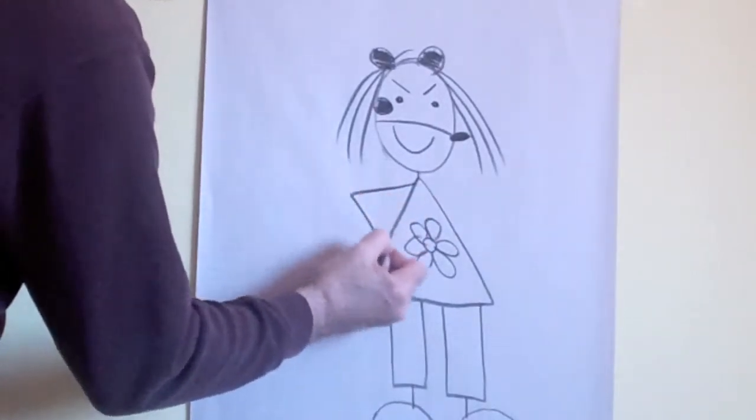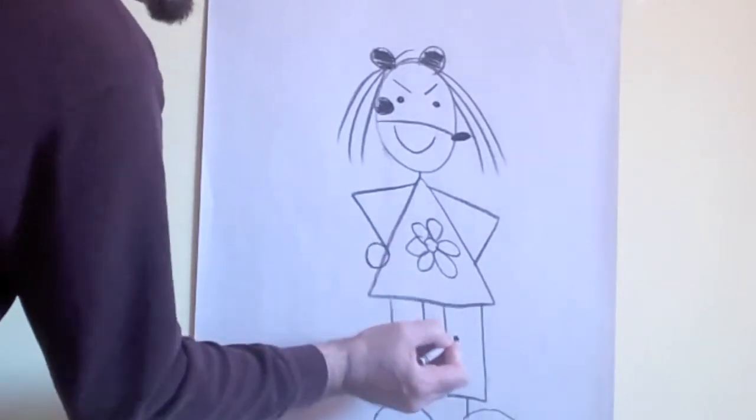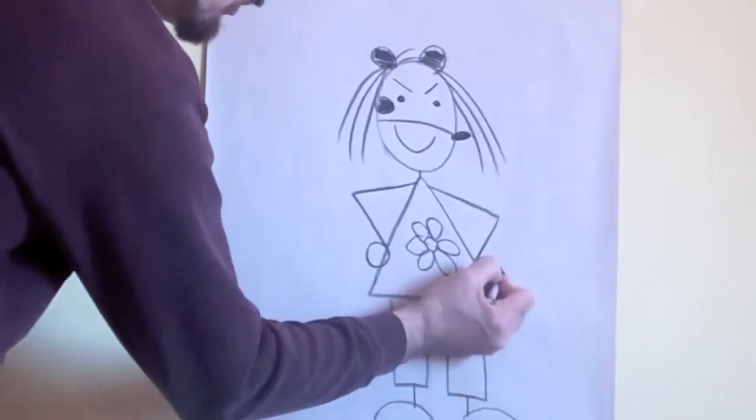And to make her arms, make a triangle on this side, and one on this side. Then make a circle here, and a circle there, with some fingers.